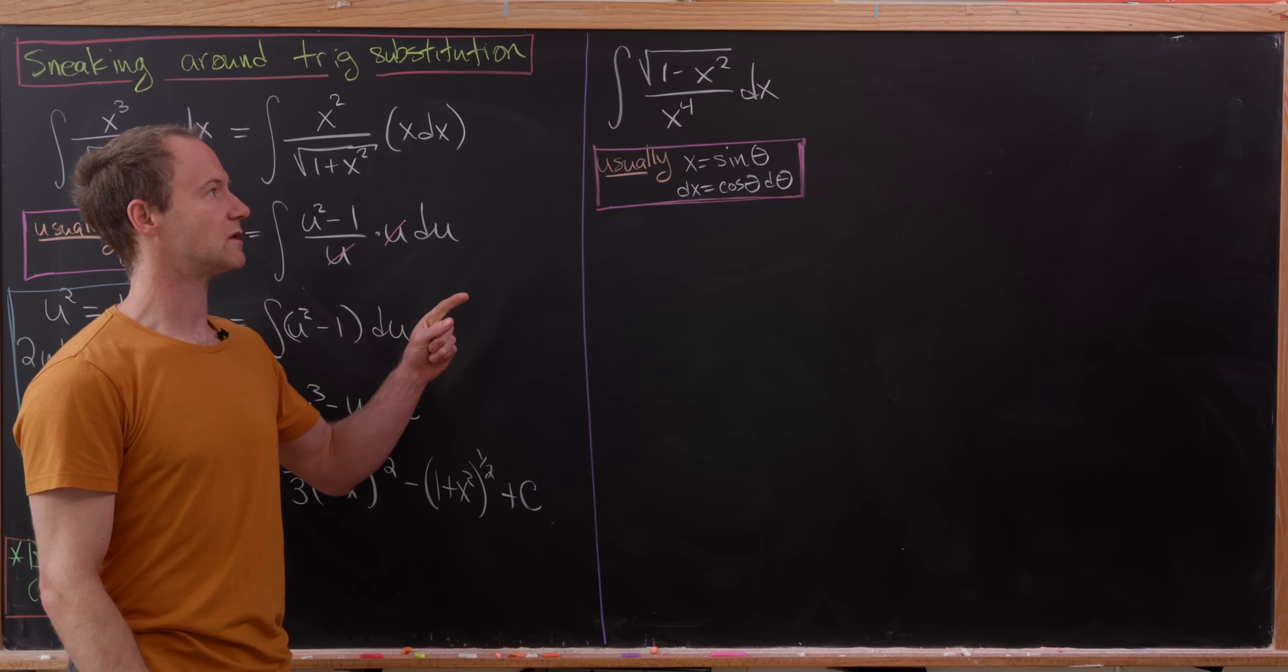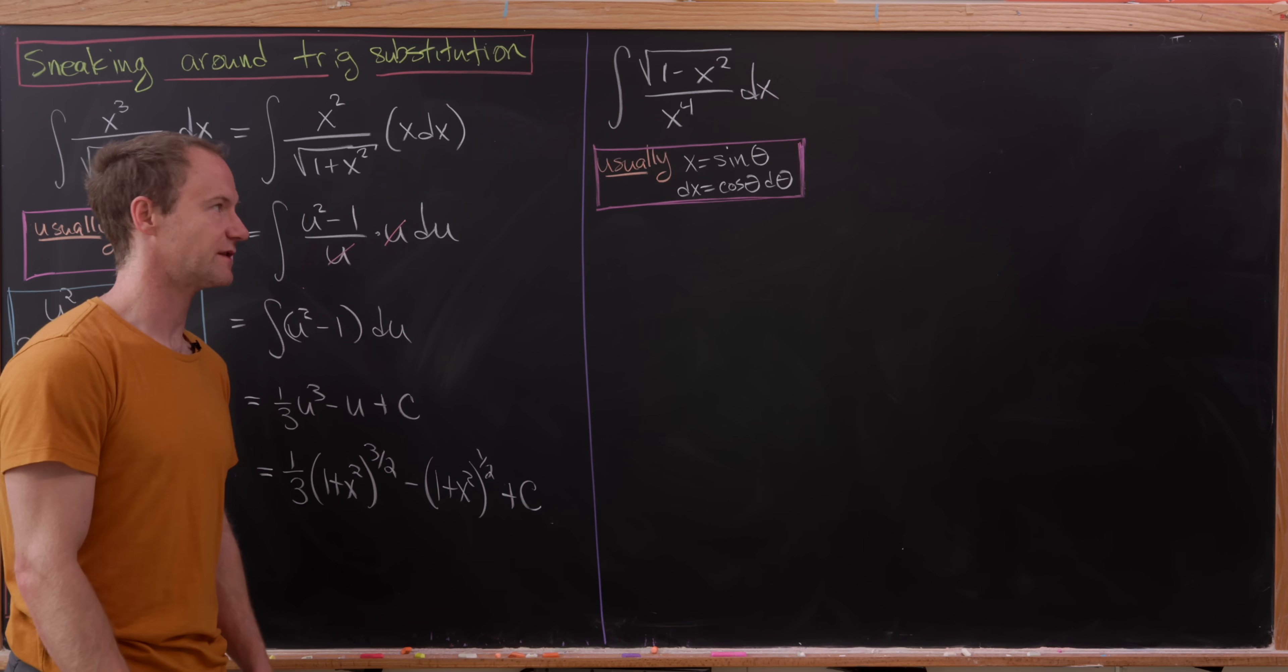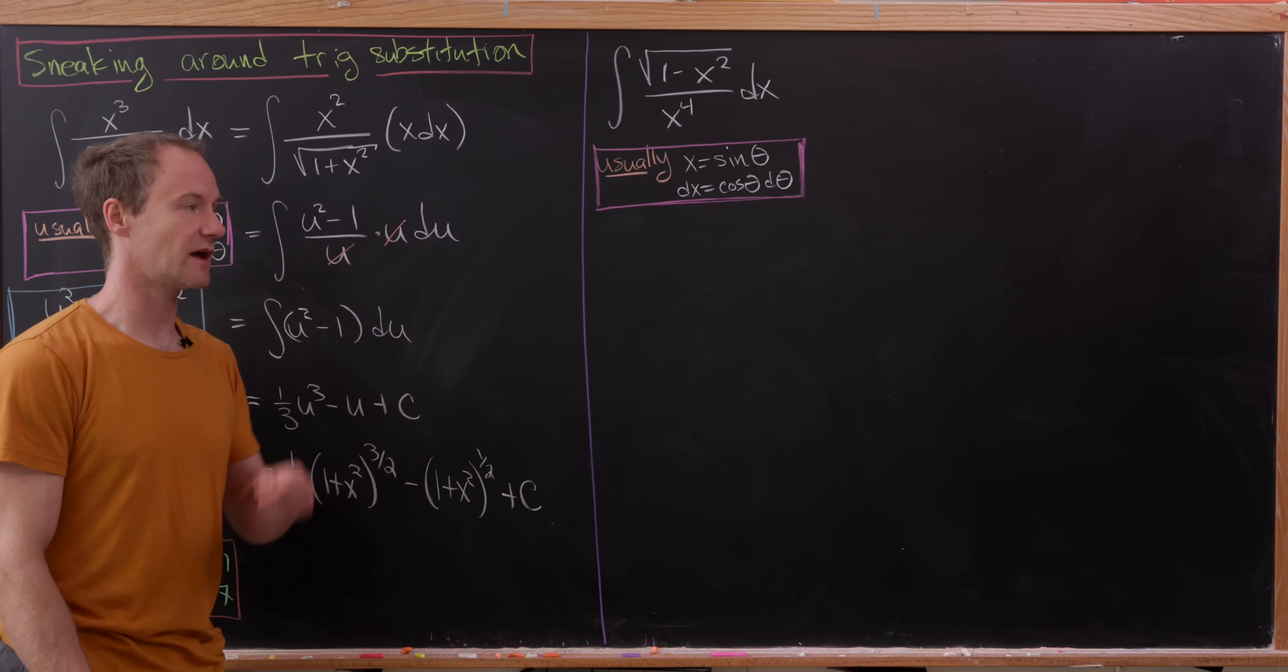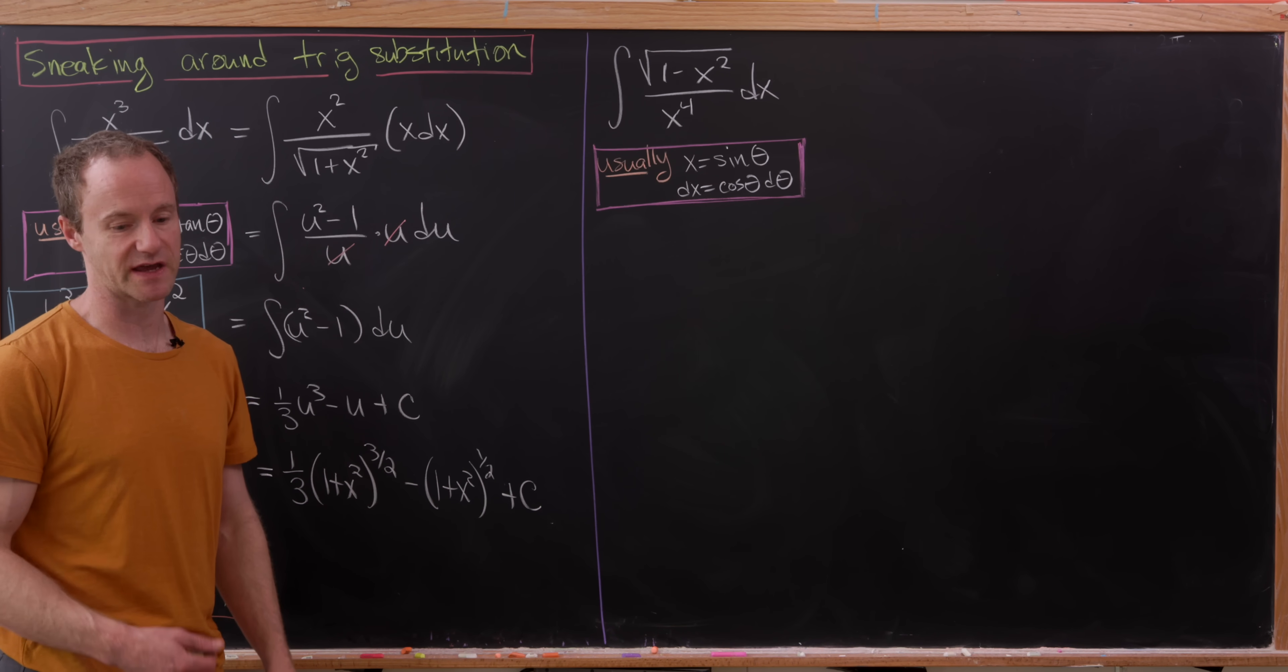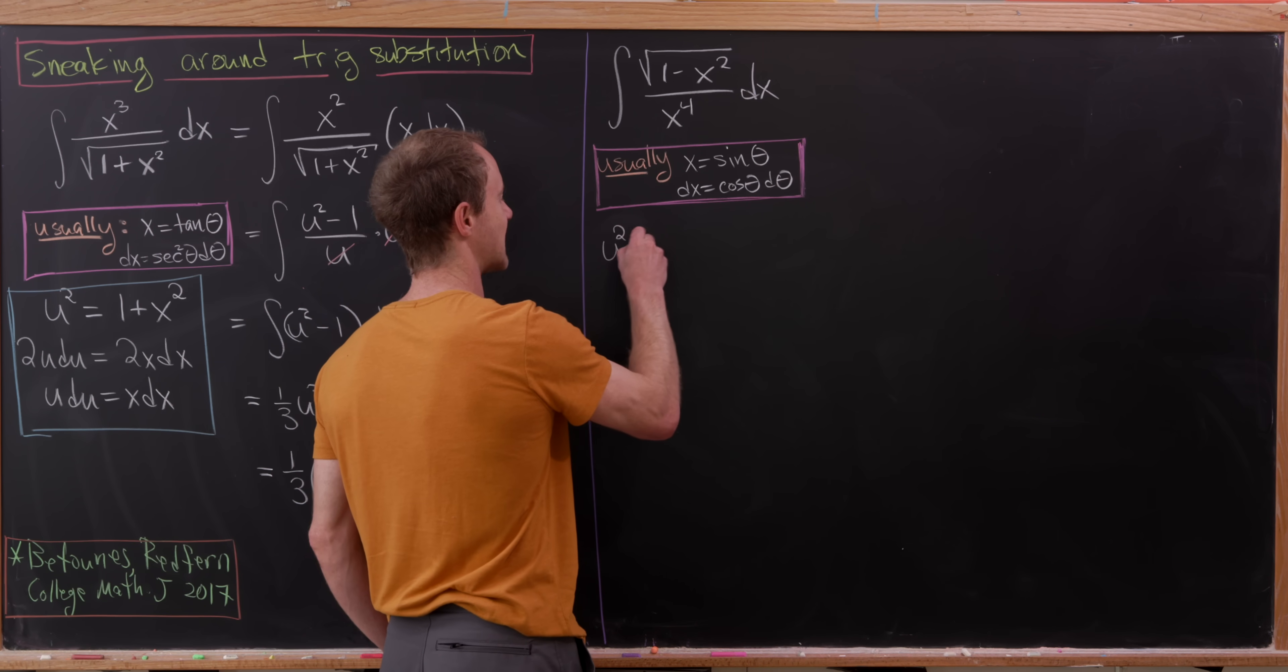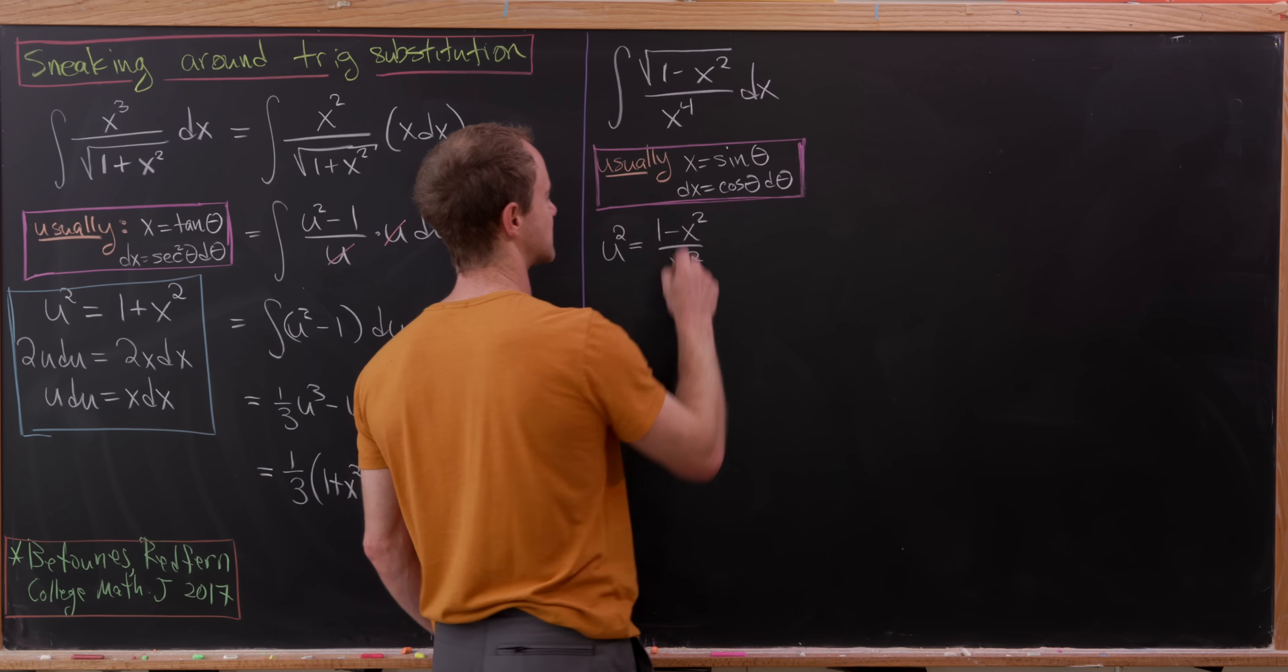And that's what we'll look at with this second integral, which is the integral of the square root of 1 minus x squared over x to the 4th. And, well, usually in this case, we would set x equal to sine theta and that makes dx cosine theta d theta, and then you get some nice simplification from there. But here we're going to make another u squared substitution. And in this case, the u squared substitution will be 1 minus x squared over x squared.